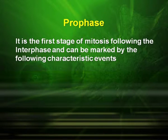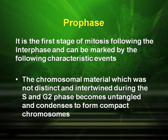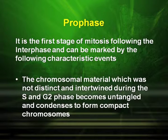The first stage of mitosis following the interphase is prophase. Prophase can be marked by the following characteristic events. The chromosomal material, which was not distinct and intertwined during the S and G2 phases, becomes untangled and condenses to form compact chromosomes.